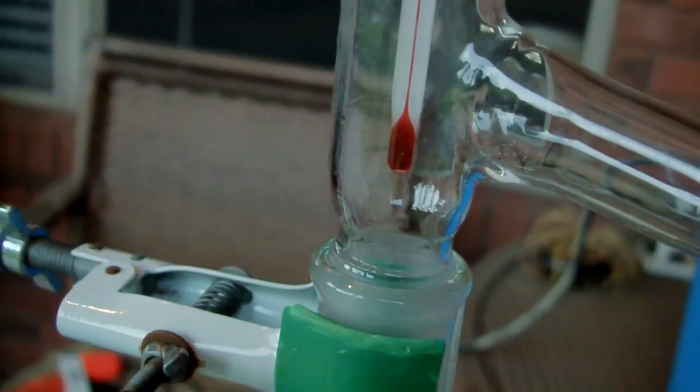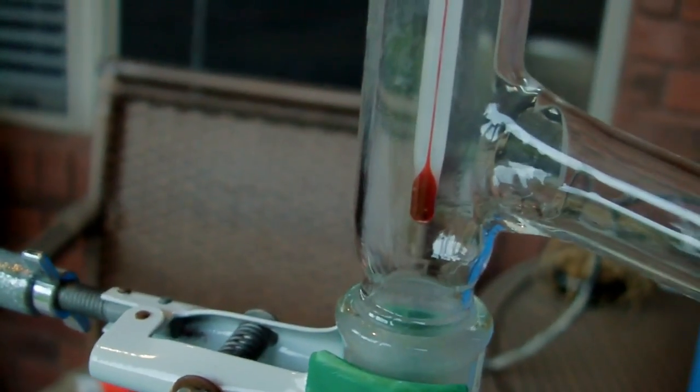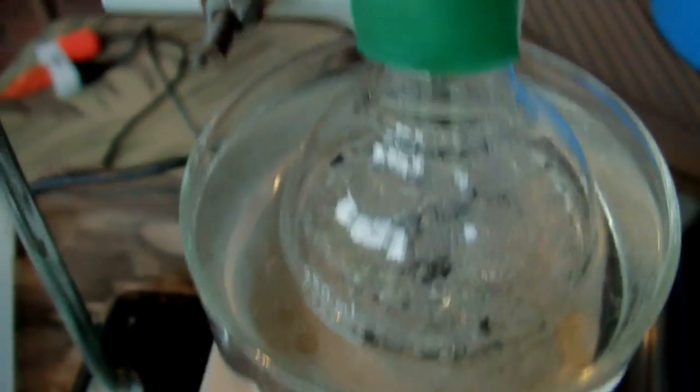So like I said, it's condensing on the bulb of the thermometer and that's going to lower the temperature a little bit and throw off the reading slightly. But I think I'm pretty confident that what I'm actually getting is dichloromethane. So we'll continue on.